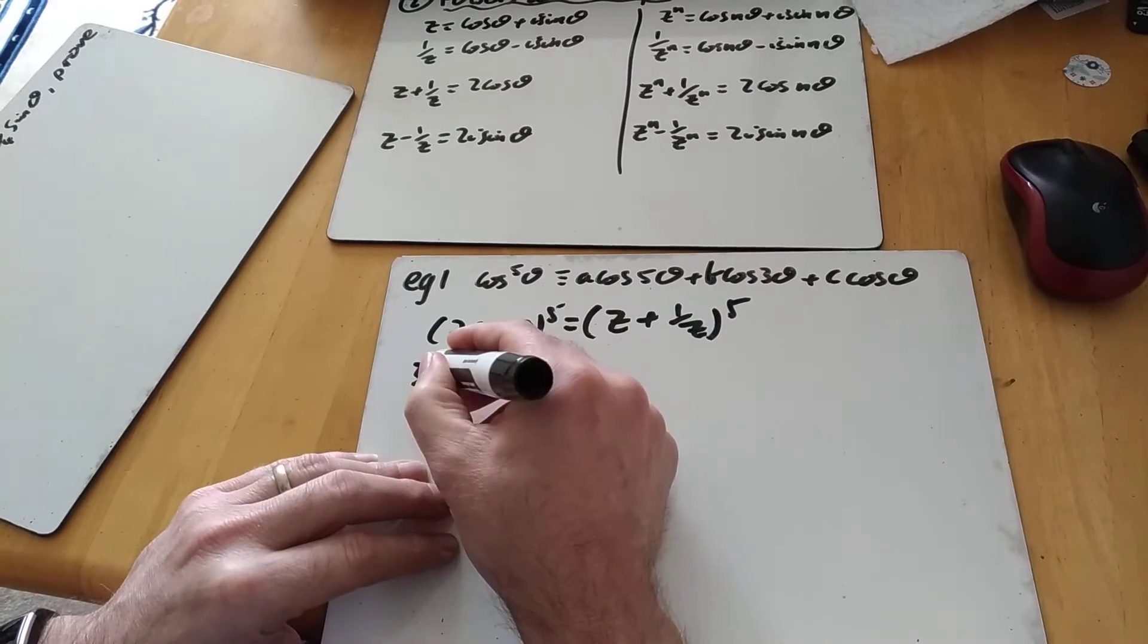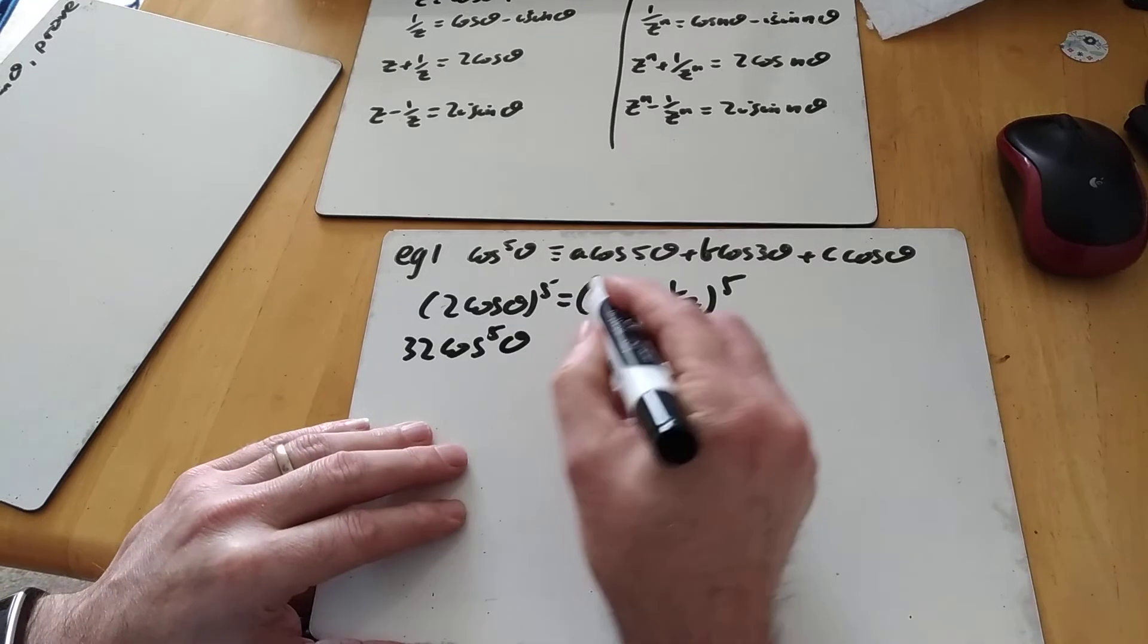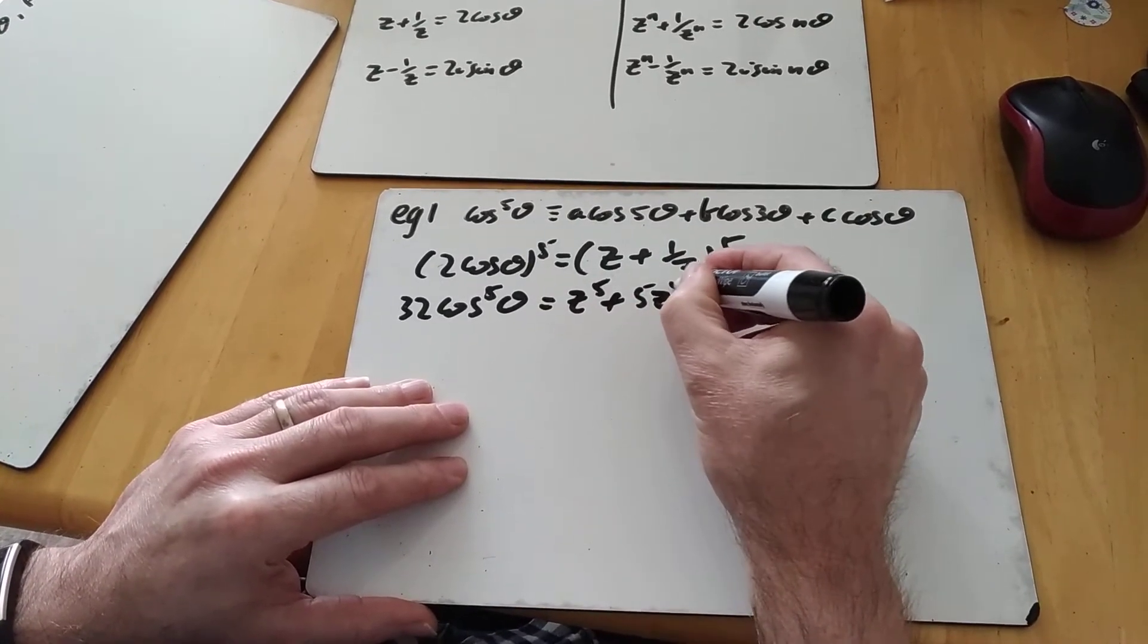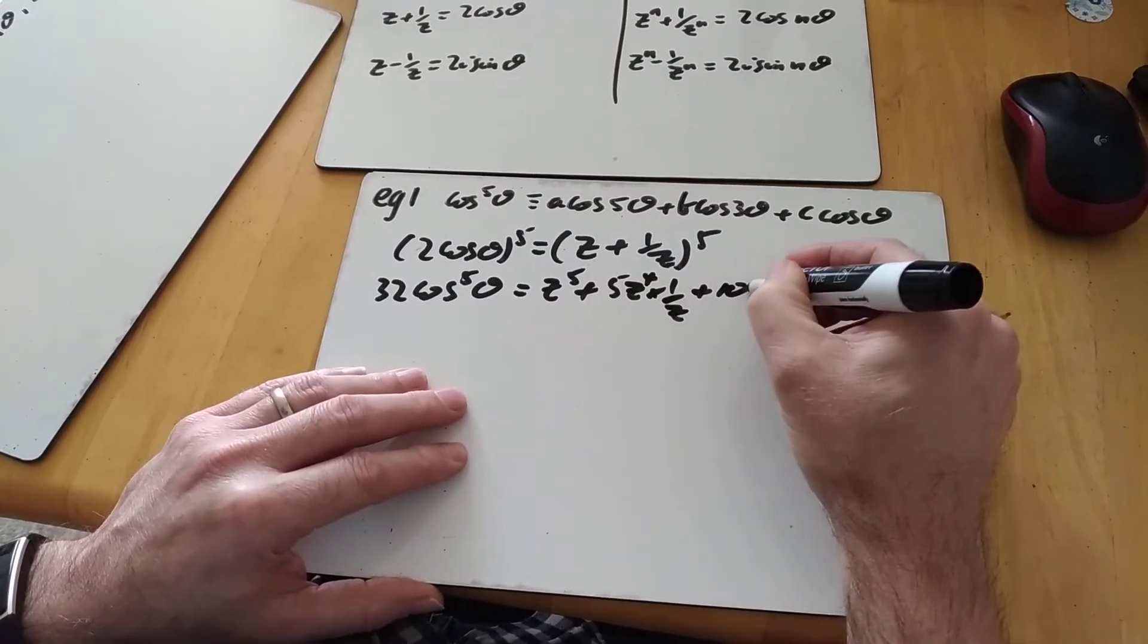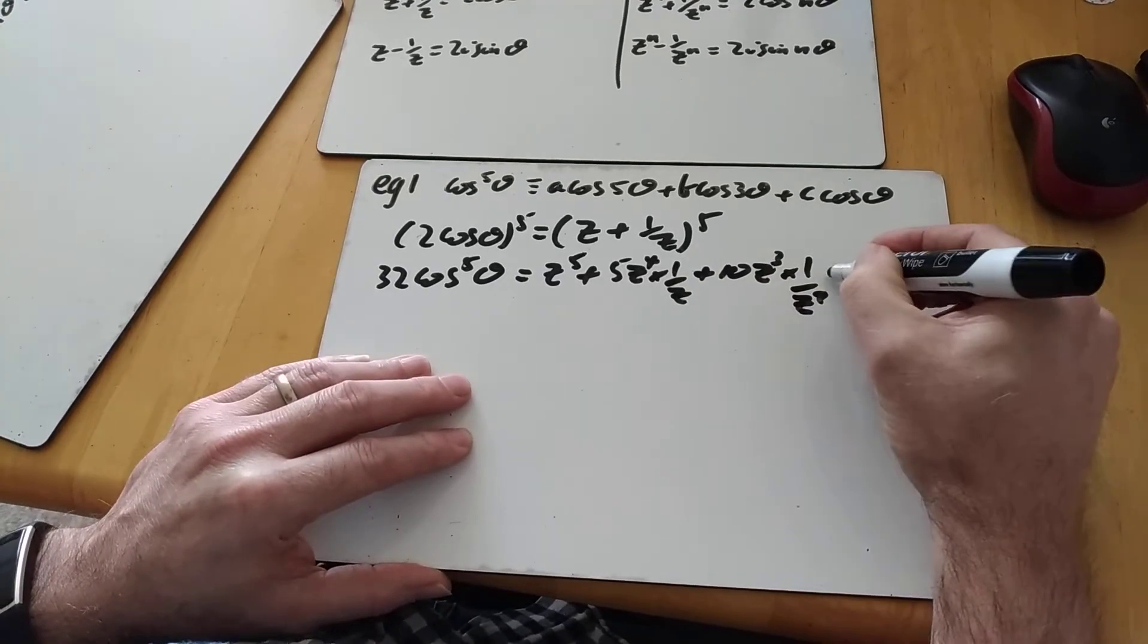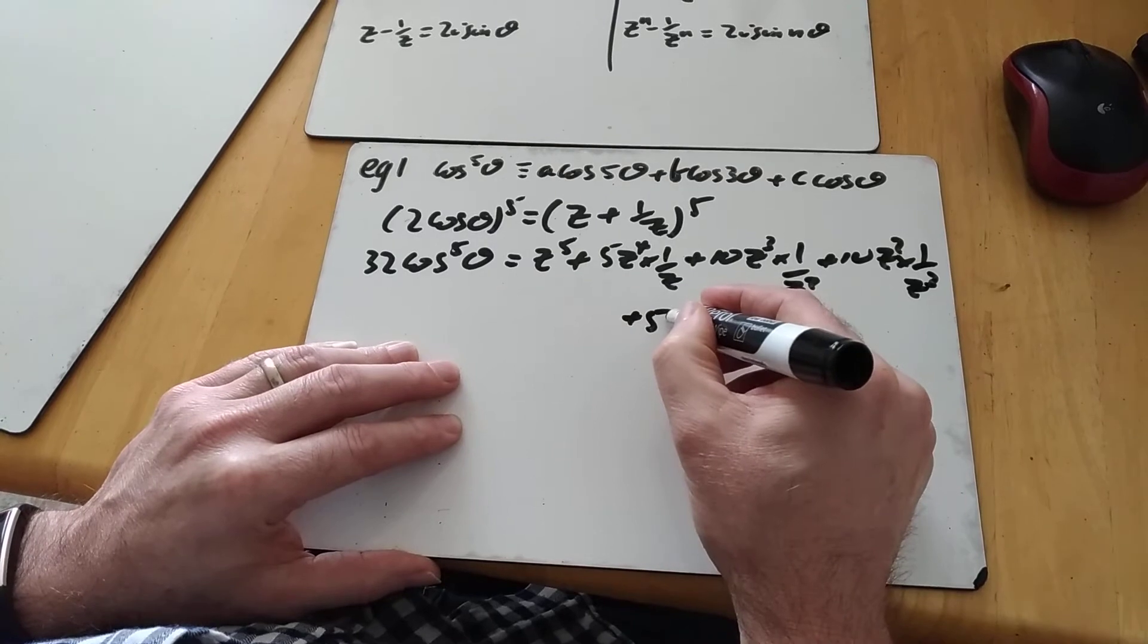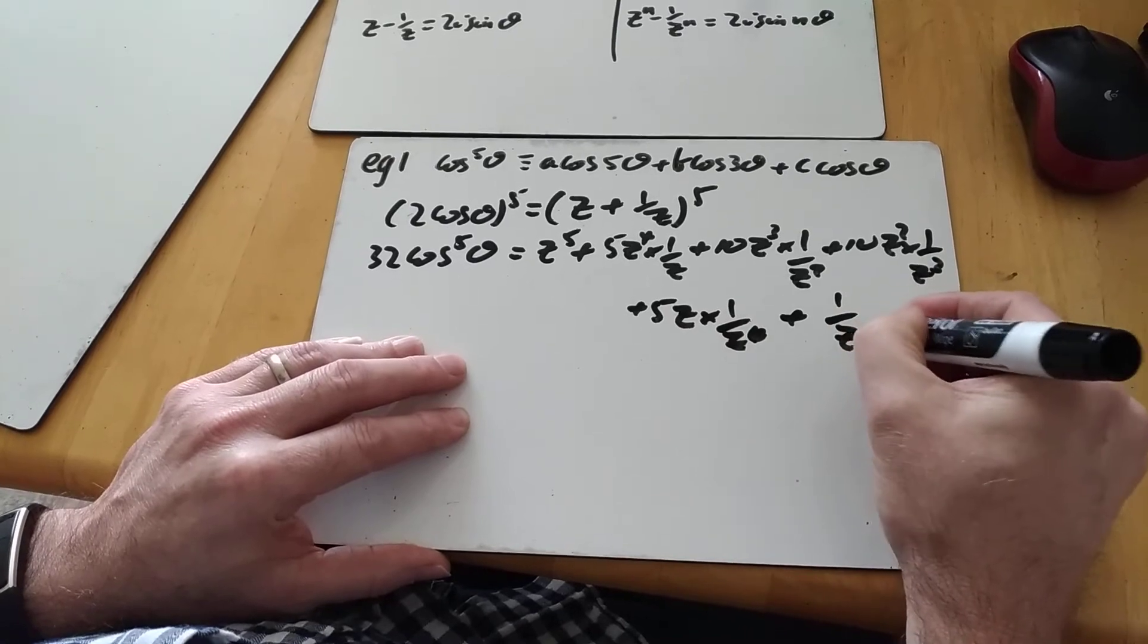Expand it all out, 2 to the power of 5, 32 cos to the 5 theta. That's how I'm going to get my cos to the 5 theta expression. And in this case here, do a binomial on it. z to the 5, 5z to the 4 times 1 over z plus 10z cubed times 1 over z squared plus 10z squared times 1 over z cubed plus 5z times 1 over z to the 4 and then plus 1 over z to the power of 5.